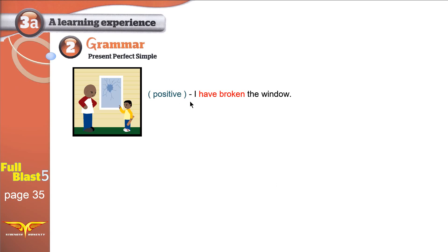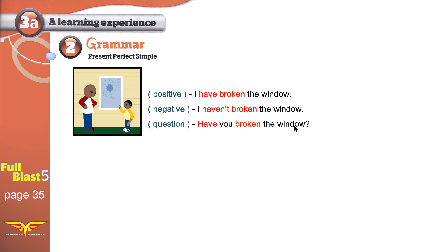Now let's talk about the positive, negative, and question forms of Present Perfect. The positive: 'I have broken the window.' The negative: 'I haven't broken the window — my brother has.' For a question, the father asks: 'Have you broken the window, Mohamed?' Answer: 'No father, I haven't broken the window — my brother has. He has broken the window.' You can answer with either 'Yes, I have' or 'No, I haven't.'